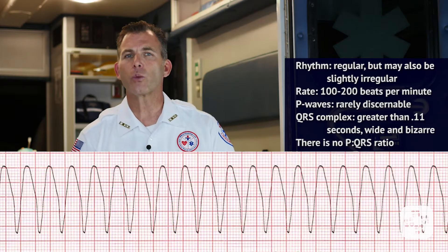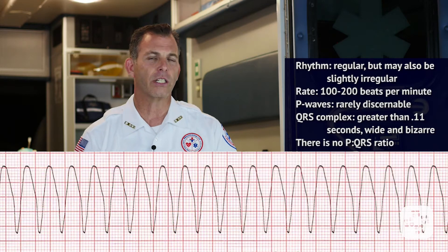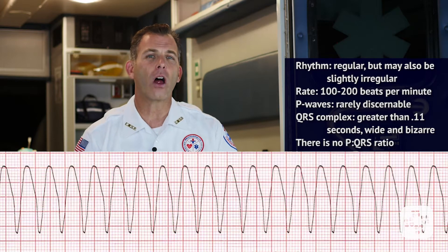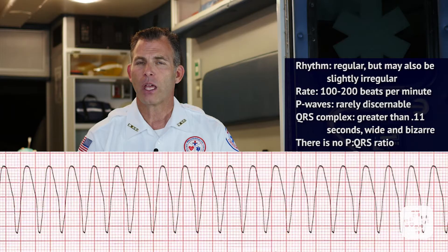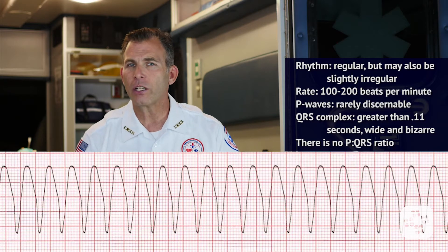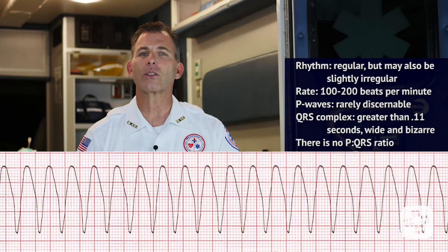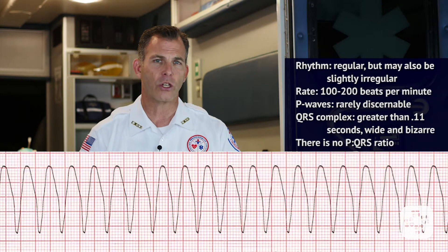A very common VTAC is called monomorphic ventricular tachycardia, meaning that all of the complexes are the same size, direction, and shape. This is usually caused by an ectopic pacemaker somewhere in the ventricle. On ECG, the rhythm is regular but may be slightly irregular, with a rate around 150 to 200 beats per minute. There are rarely any discernible P waves, no discernible P-to-R interval, and the QRS complex is greater than .11 seconds — wide and bizarre with no P wave to QRS ratio.